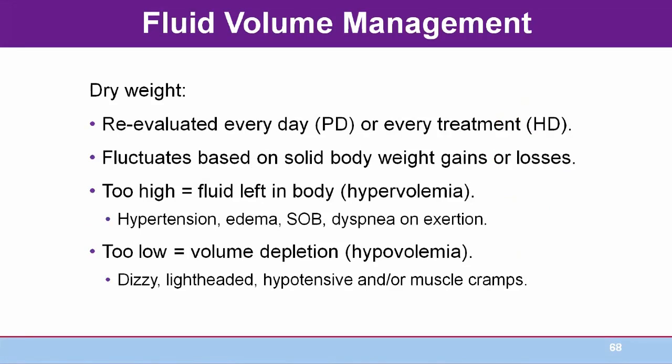PD patients should maintain their target or dry weight. Hemodialysis patients should achieve their target weight by the end of every dialysis session. Target weight will fluctuate based on solid body weight gains or losses. If the patient's target weight is overestimated, they will retain excess fluid, which may manifest as hypertension, edema, shortness of breath, or dyspnea on exertion. If the target weight is underestimated, the patient is essentially dehydrated during hemodialysis, which may present as dizziness, lightheadedness, hypotension, and muscle cramps.